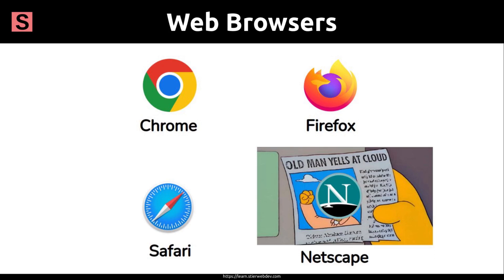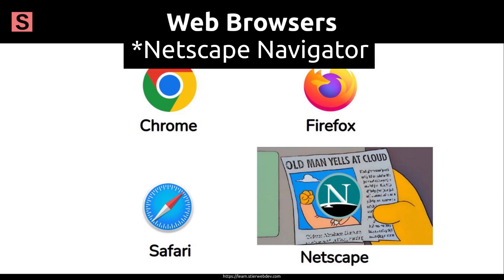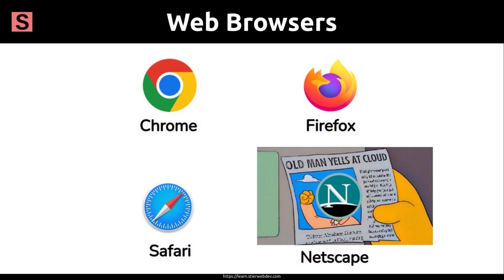You've heard of them. You've used them, obviously, because you're using one right now to do this course. How many are there? There's lots of them. Chrome, Firefox, and Safari are popular nowadays. Netscape was popular back in the 1990s and early 2000s. But have you ever thought about how they actually work? What are they actually doing behind the scenes?